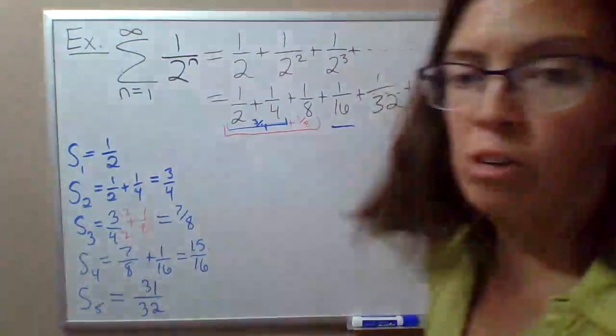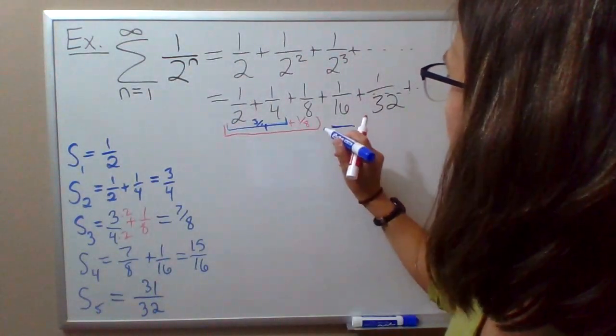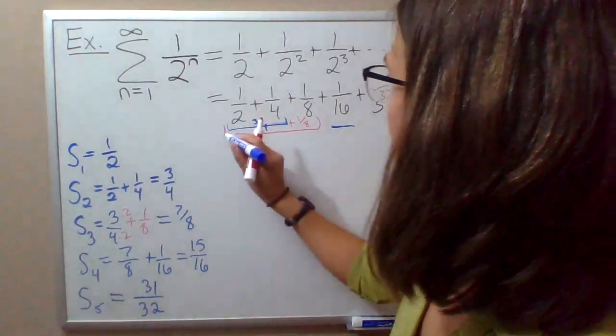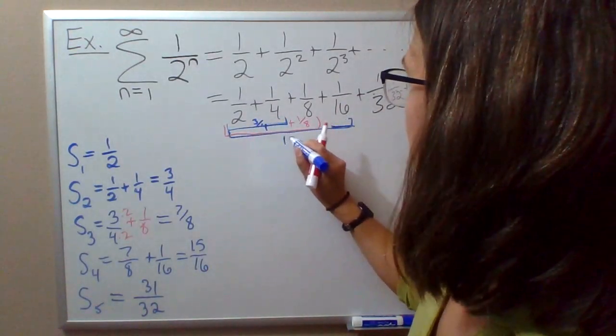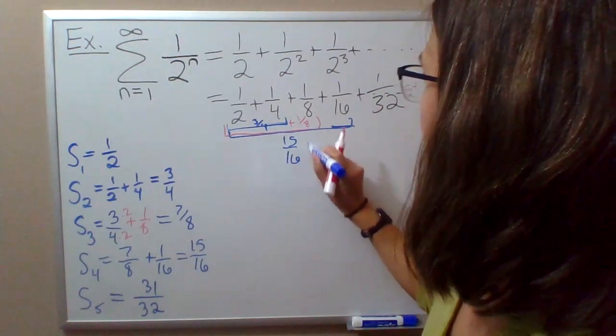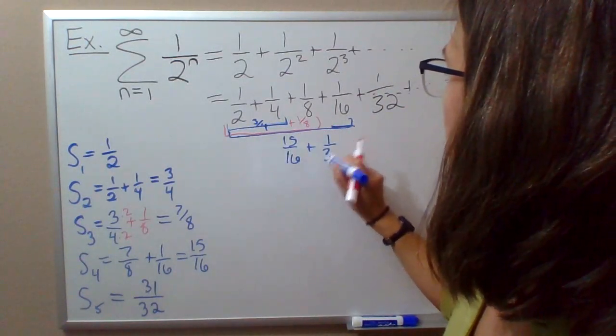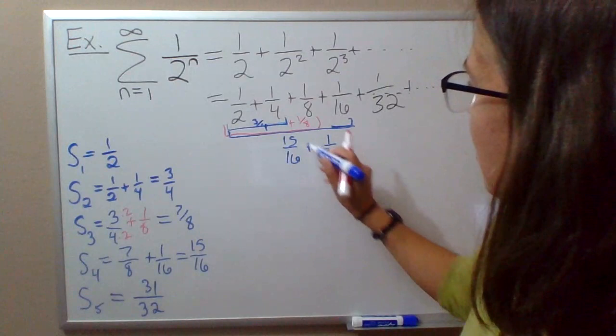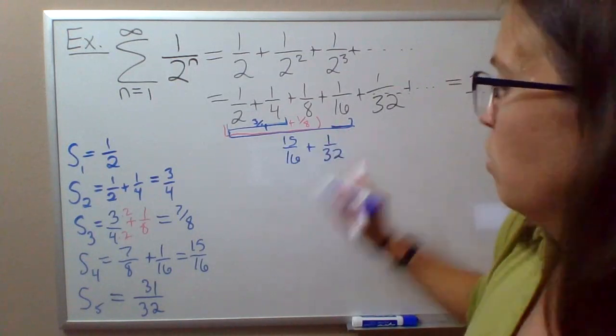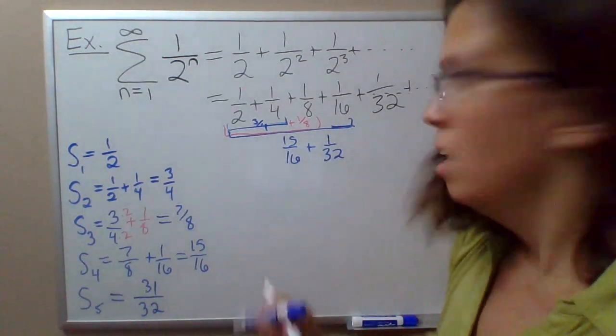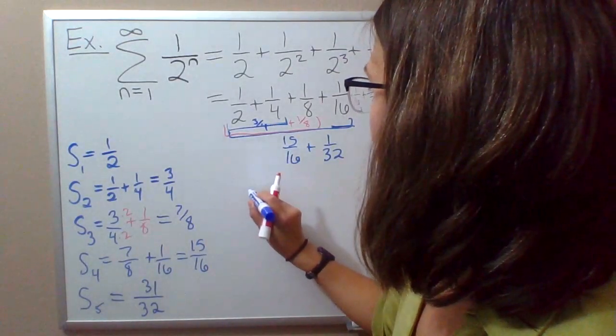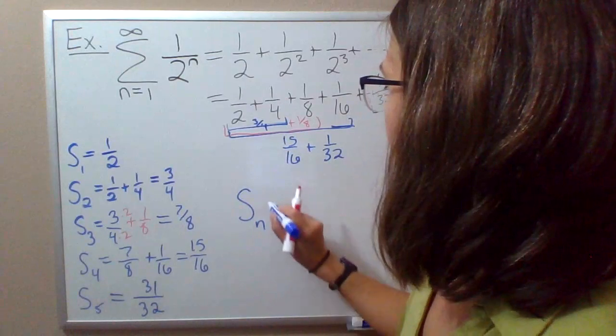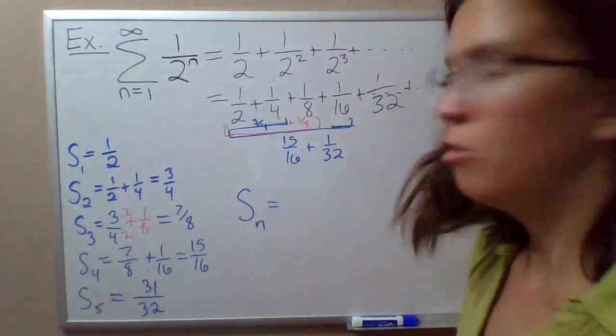If we actually work that out, we know that the sum of the first four terms is 15 over 16. If we add the next term, which is 1 over 32, that's 30 over 32 plus 1 over 32, so we do get 31 over 32. So it looks like we're ready to write a general formula for the nth partial sum.